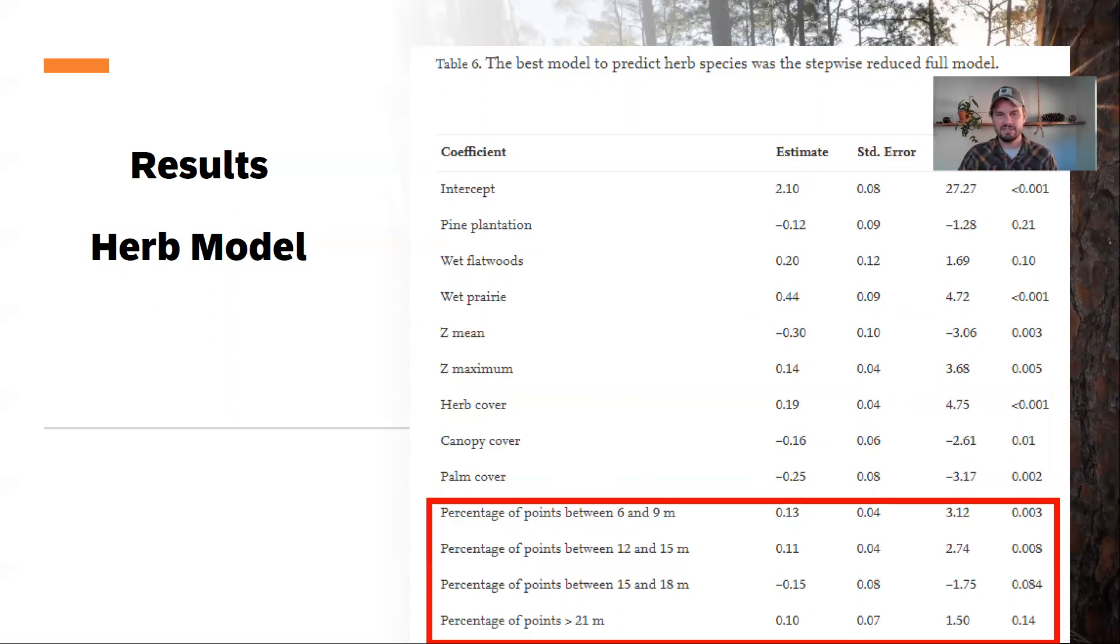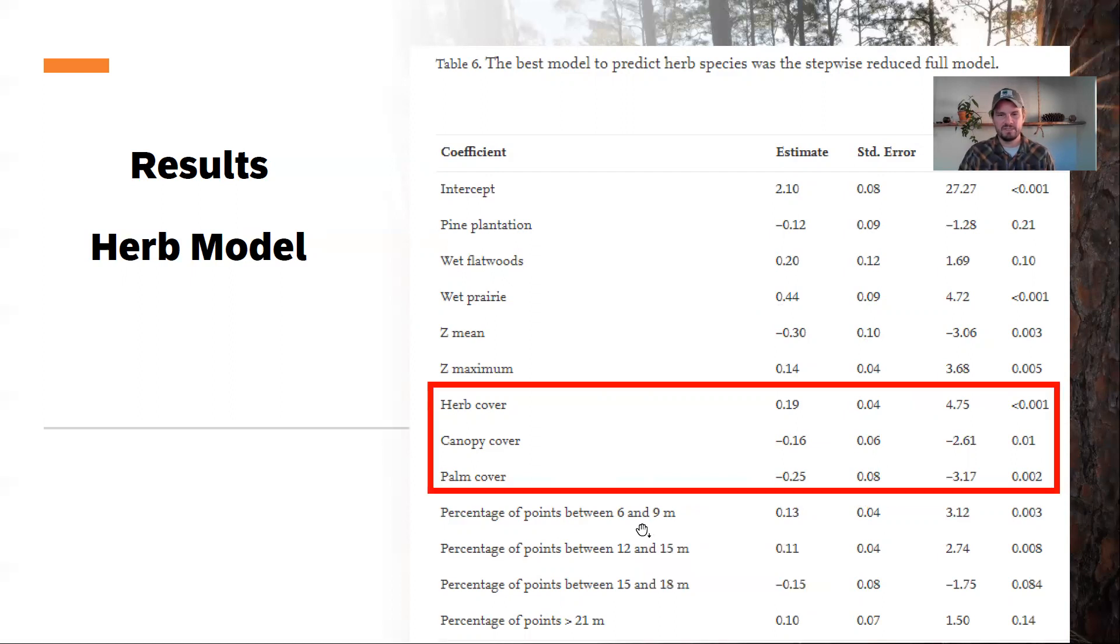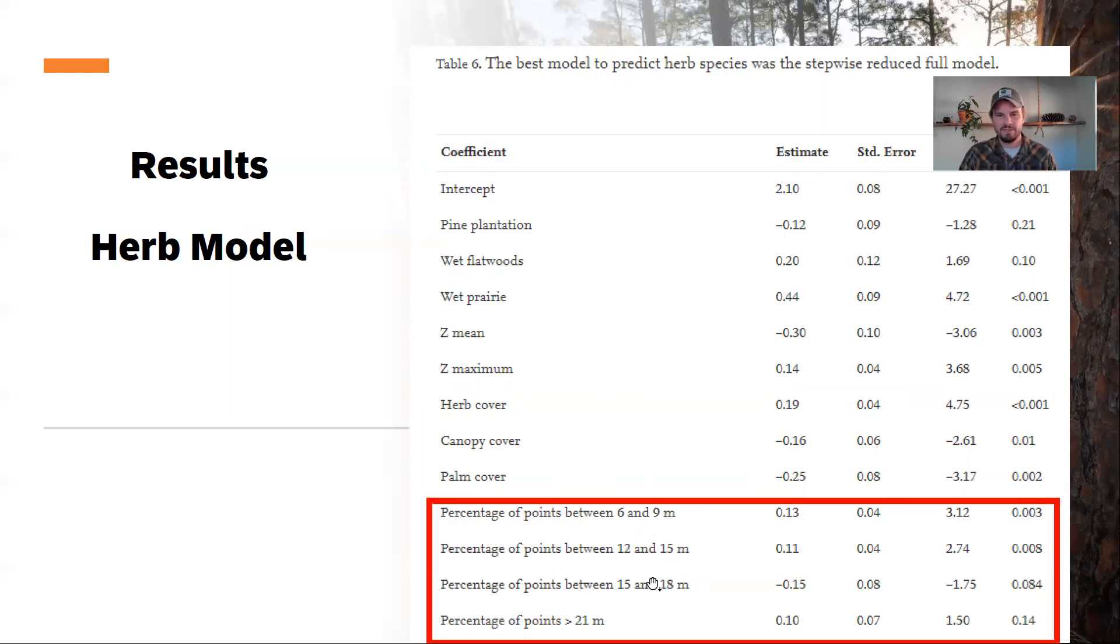And then a lot of these canopy metrics are really important here in the herb species model. So you can see that percentage of points between six and nine meters, and twelve to fifteen meters and fifteen to eighteen and greater than twenty-one were really all important in this final herb richness model. So the canopy dynamics were really important there.